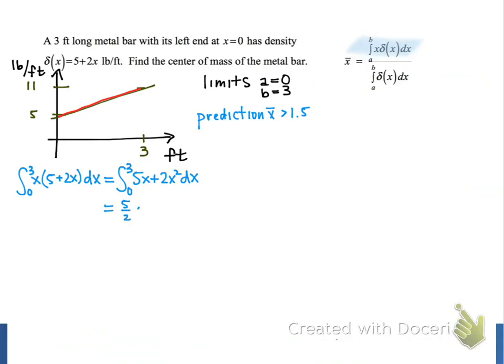The antiderivative of this function is 5 halves x squared plus 2 thirds x cubed. And we're going to evaluate at the limits, x equals 0, x equals 3, and then subtract. So when we evaluate at x equals 3, we get 5 halves times 3 squared, or 9, plus 2 thirds times 3 cubed, which is 27. And when we evaluate the antiderivative at x equals 0, the result is simply 0. This simplifies to 22.5 plus 18, which is equal to 40.5. This will be the numerator of our result.